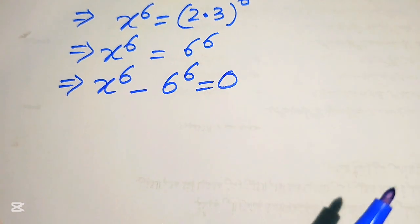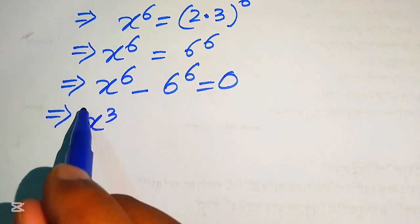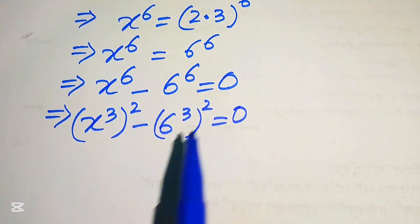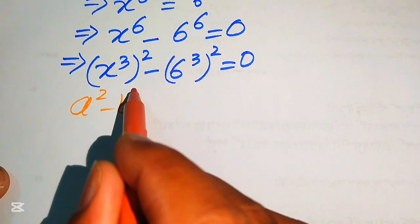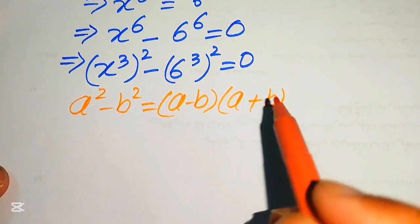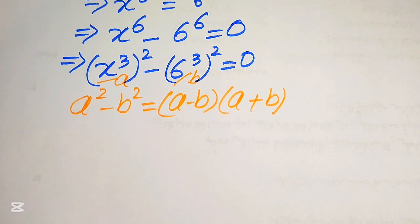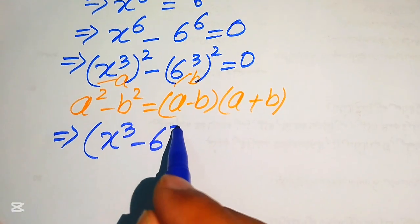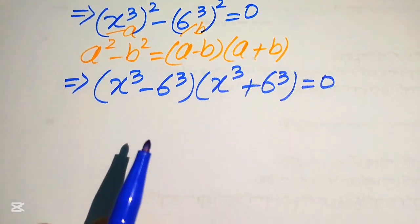We rewrite this equation by expressing x^6 as (x³)² and 6^6 as (6³)², so the equation becomes (x³)² − (6³)² = 0. Applying the algebraic formula a² − b² = (a − b)(a + b), where a = x³ and b = 6³, we get (x³ − 6³)(x³ + 6³) = 0.